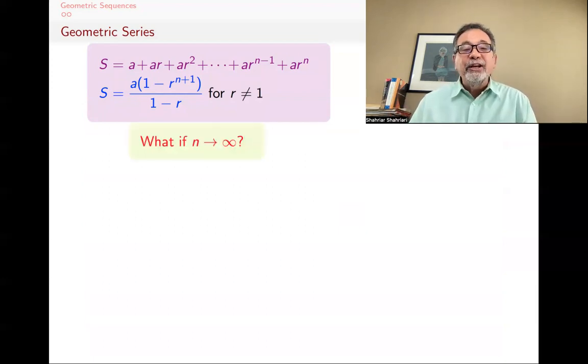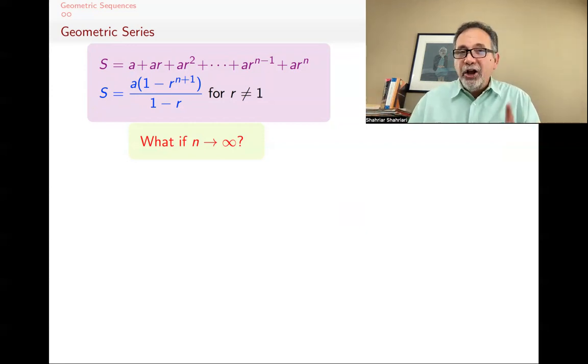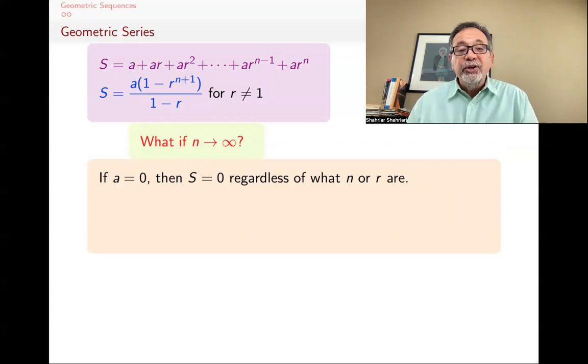Now, the question is what if n goes to infinity? What if I just keep going? Well, in the chess example, of course, if the chess was infinite by infinite, then there would be infinite amount of stuff that you would want. So most of the time, if you go forever, you're going to get infinite, but not always. So if actually A is 0, if you started with 0 and keep doubling or multiplying by R, you will always get 0. Nothing will happen.